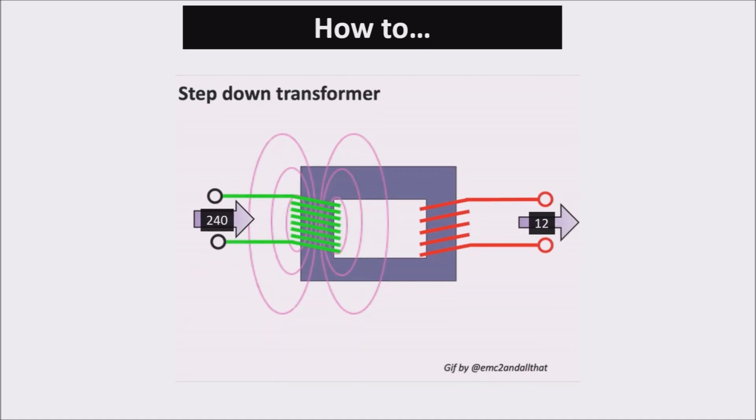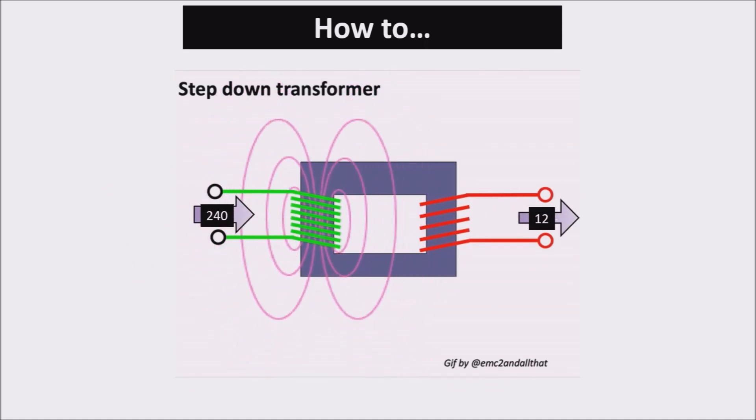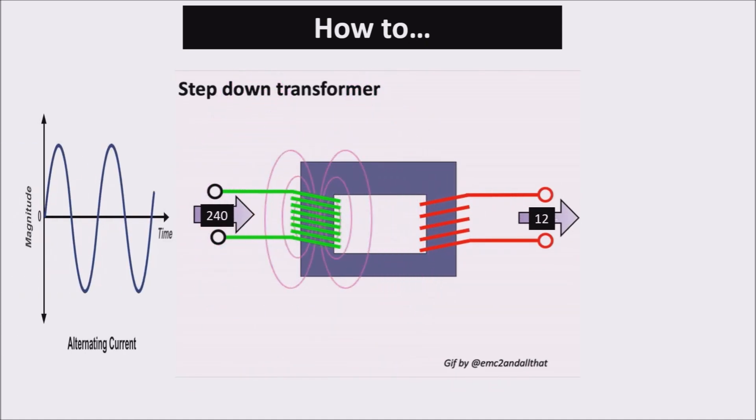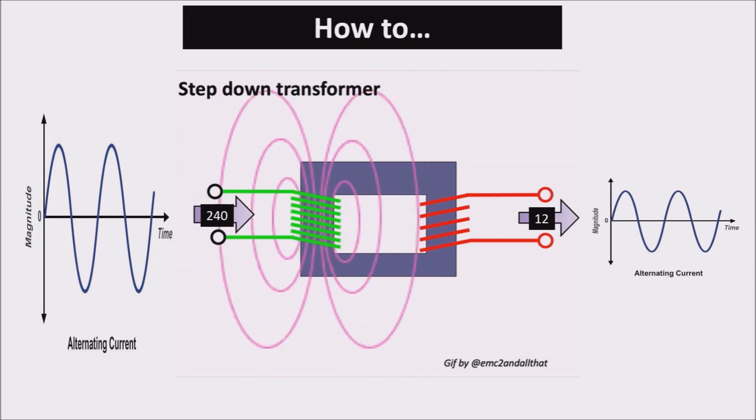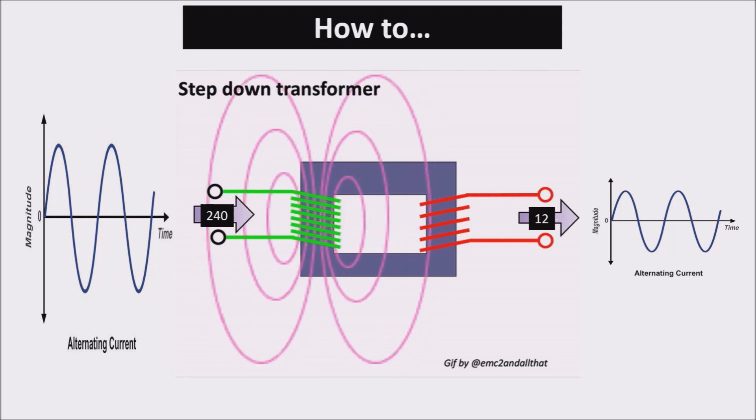The first is a transformer, which is an element that transforms an alternating voltage into a higher or lower alternating voltage, so it is an element that can change the voltage level. Fundamental for us who want to turn 240 volts into 12 volts. Specifically this is a step-down transformer.